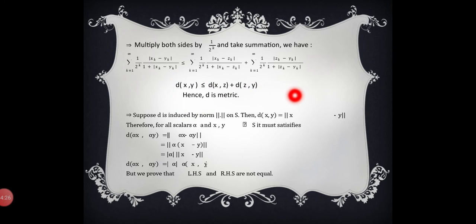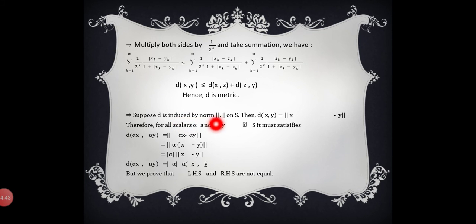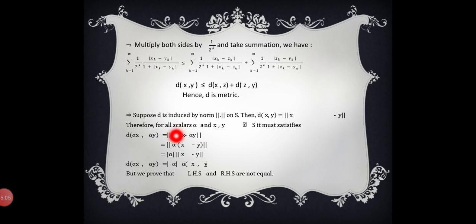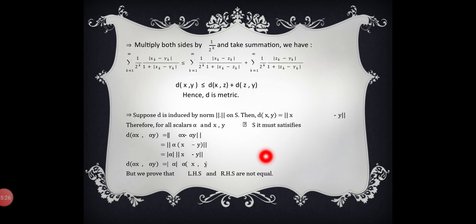Now the last step: we must prove that d is not a normed linear space. To show d is not induced by a norm on s, we suppose for contradiction that d is induced by a norm, so d(x, y) = ‖x − y‖. Then for all scalars α and x, y ∈ s, it must satisfy d(αx, αy) = ‖αx − αy‖ = |α|·‖x − y‖ = |α|·d(x, y). We will show that the left-hand side and right-hand side are not equal.